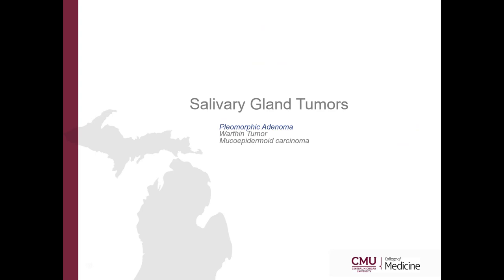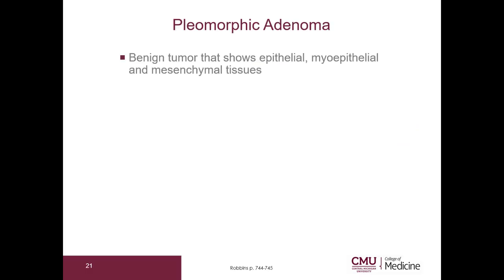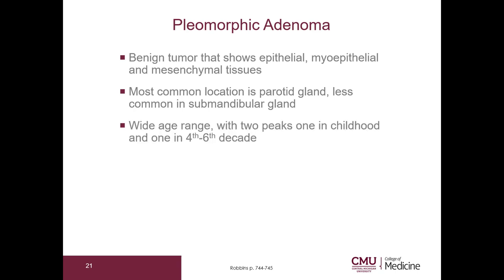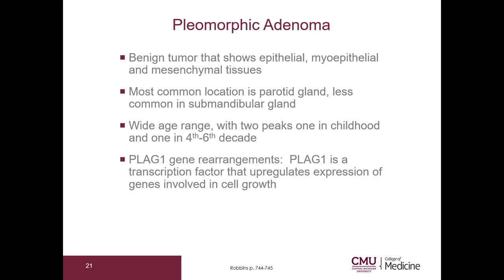Let's go on to salivary gland tumors. Pleomorphic adenoma is a benign tumor that shows epithelial, myoepithelial, and mesenchymal tissues. The most common location is the parotid gland. There is a wide age range with one peak in childhood and another peak in the fourth through sixth decade. Pleomorphic adenoma has PLAG-1 gene rearrangements; PLAG-1 is a transcription factor that upregulates expression of genes involved in cell growth.